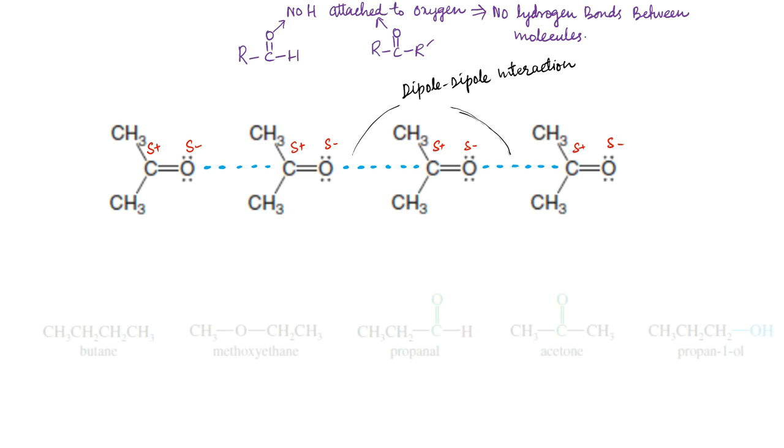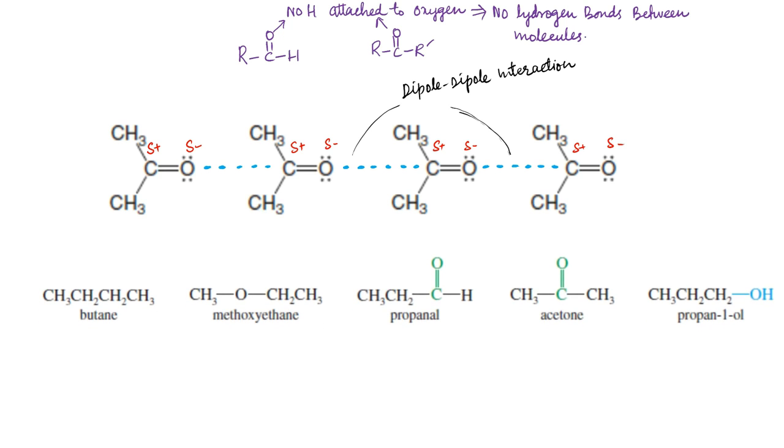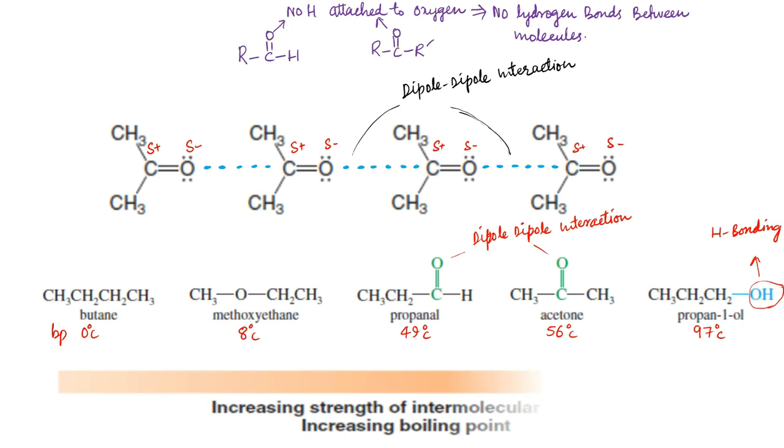The following compounds of molecular weight 58 or 60 are ranked in order of increasing boiling points. The hydrogen bonding attractive forces in alcohols are stronger than dipole-dipole interactions in aldehydes and ketones, which are stronger than London forces in hydrocarbons. Thus for same molecular weight, boiling point increases with increasing strength of intermolecular forces in different molecules.